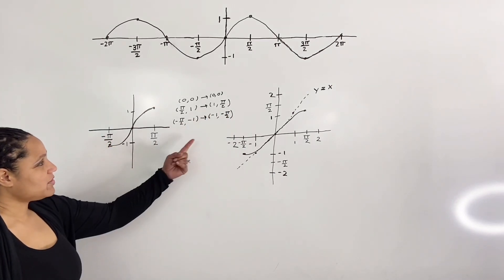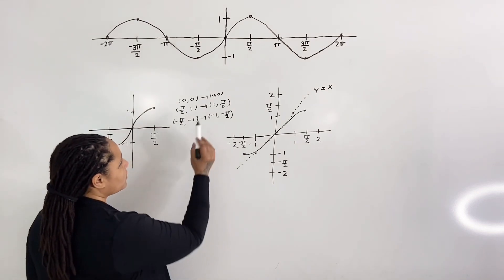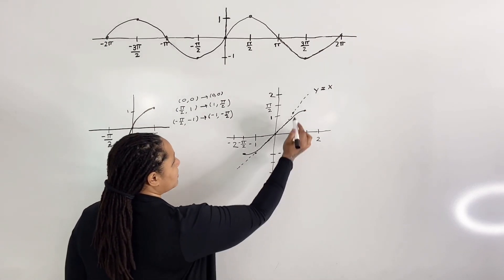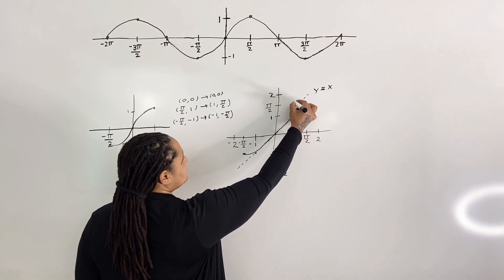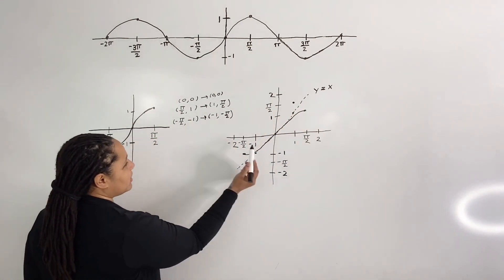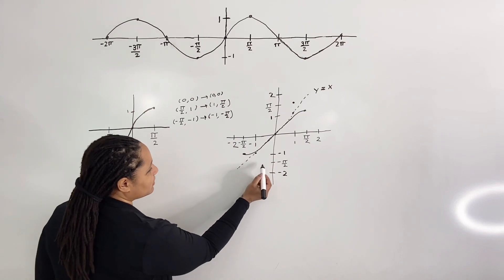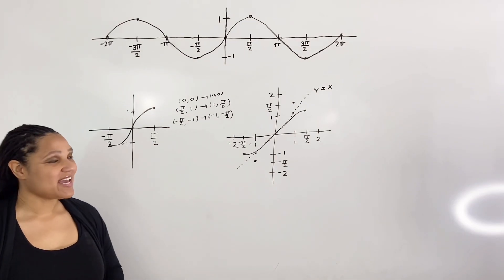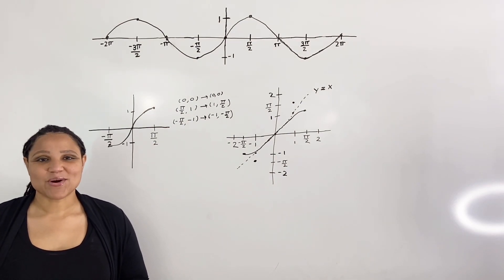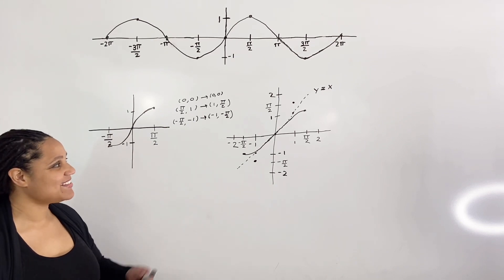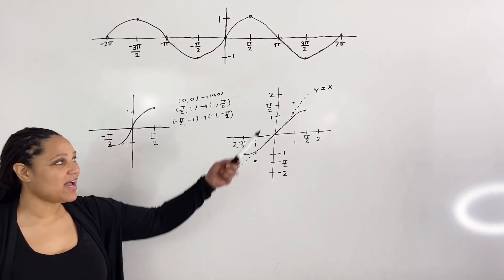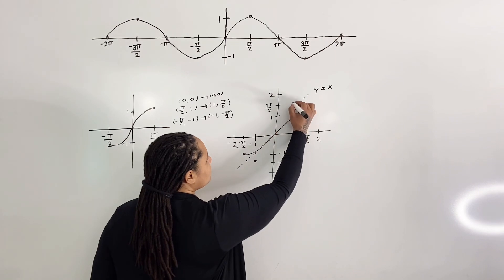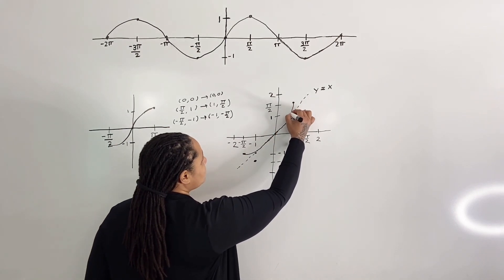We plot those swapped points on the graph: (0, 0) stays the same; (1, pi over two) is placed here; and (negative 1, negative pi over two) is placed here. You can see that our x and y values are swapped. The last step is to connect the dots and reflect about the line y equals x. This new graph is our inverse sine graph.